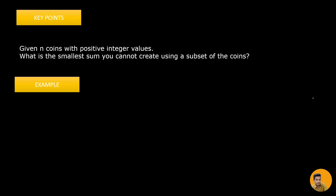Let's take an example. Here we have 5 coins of the values 2, 9, 1, 2, and 7, and we need to find the smallest sum that we can't create using these coins.